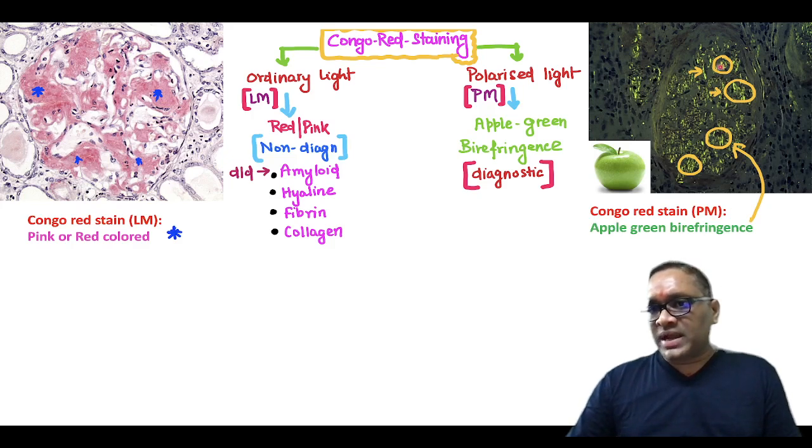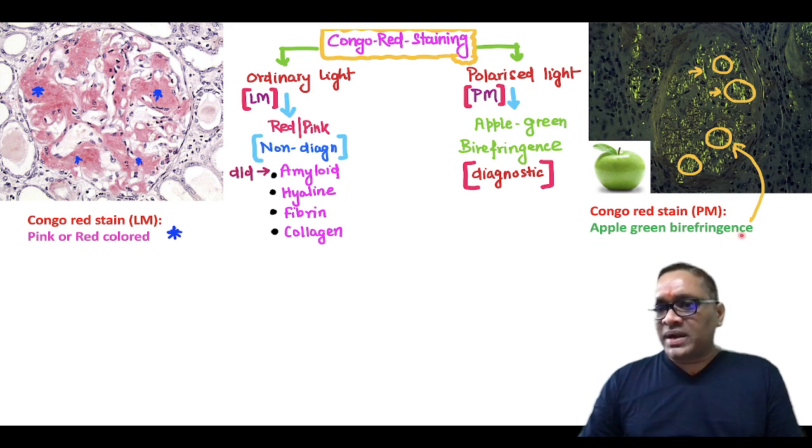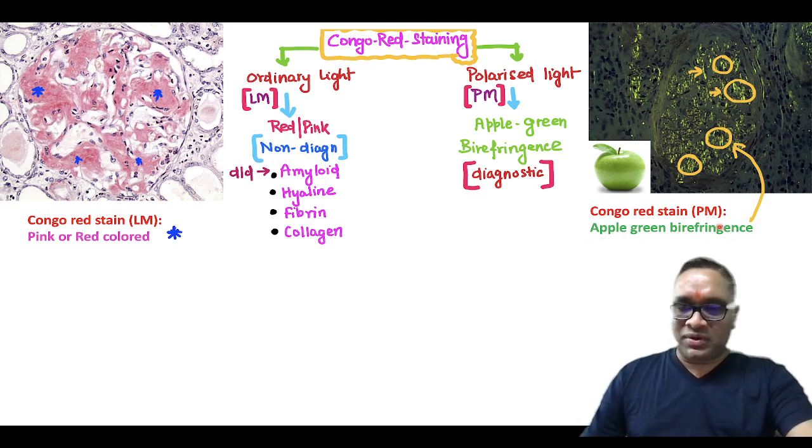With Congo red staining under polarized light, you can see the apple-green birefringence. This apple-green birefringence is diagnostic of amyloidosis. Enjoy learning and best wishes for your exam.